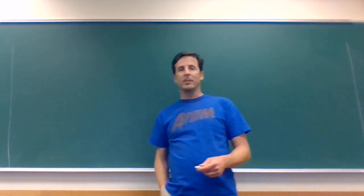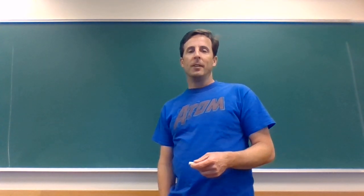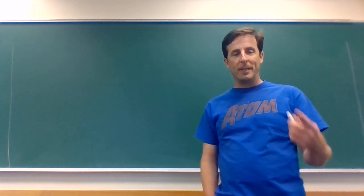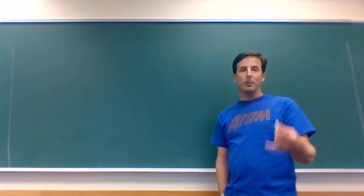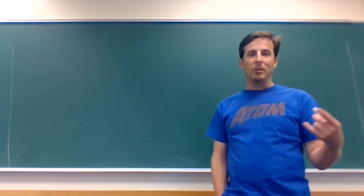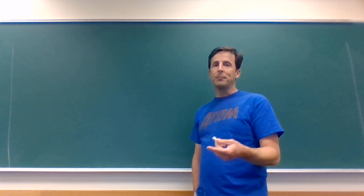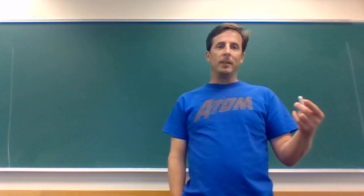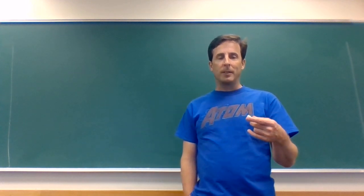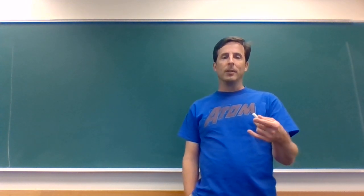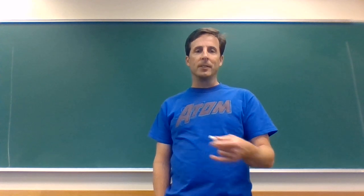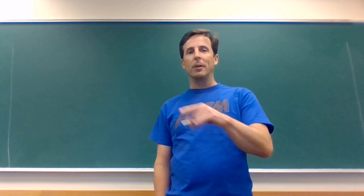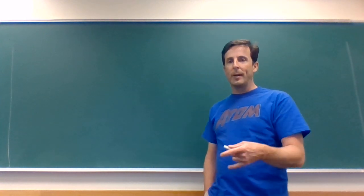Hey guys, Dr. Thomas here. When we start chapter 8, there's a bunch of reading about different types of bonding and bond energies, but what I want to help you with right now is learning how to draw Lewis dot structures. When we draw Lewis dot structures, we're drawing the atoms involved in molecules and compounds with their valence electrons — it tells us whether we form a single, double, or triple bond.